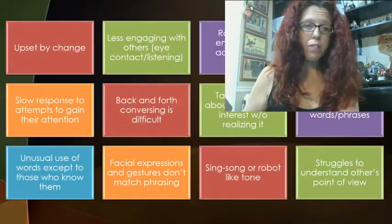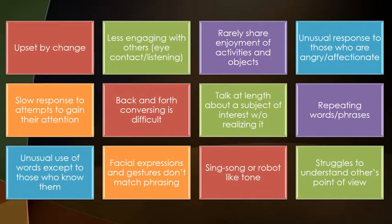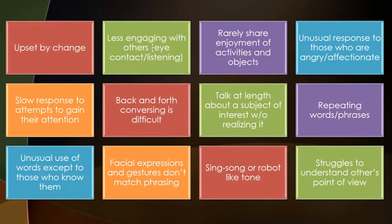People on the spectrum may have difficulties such as being very upset by the smallest bit of change — a slight change in routine can be upsetting. Some people not on the spectrum are the same way. They're less engaging with others, so they don't have a lot of eye contact, and sometimes they look like they're not listening to you. That's one particular characteristic they can have.